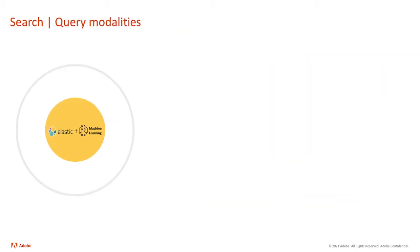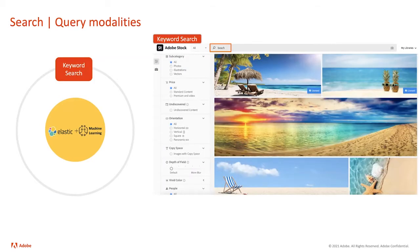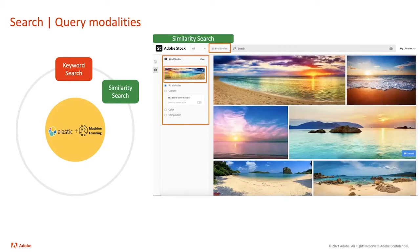Another way to think about complexity is query modalities — how you query. Keyword search is the basics: given a query of 'beach,' you get beautiful pictures on Adobe Stock or other products. The second modality is when your input is an image rather than a keyword — you start with an image and see different pictures that are very close in composition, color, and so on.